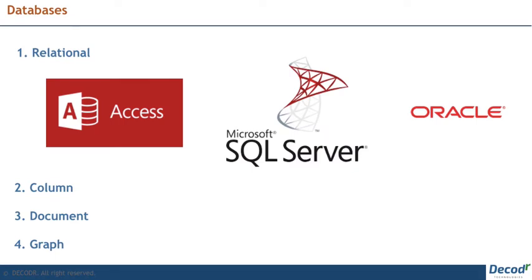Next on the list, we have Databases. Out of the four types listed below, 90% of the time we refer to what are called relational databases. For these, we use Microsoft Access, SQL Server, and Oracle. These are typically built for transactions and storage rather than analysis. While using these, you will mostly be concerned with writing queries to extract data and make it small enough to get it into your data analysis tools.